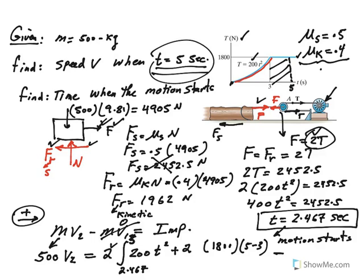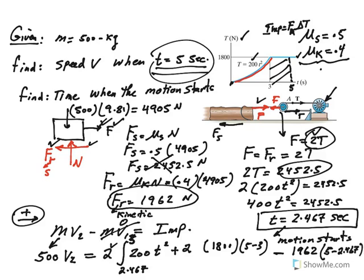What else do we have? We still have the friction force. The impulse of this friction, remember that's the kinetic friction, not the static friction. So be careful, 1962, the impulse of a constant force is force times delta T. What is delta T? Delta T is final time 5, initial time is 2.467.